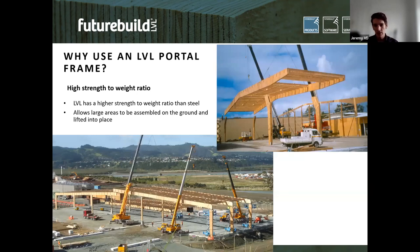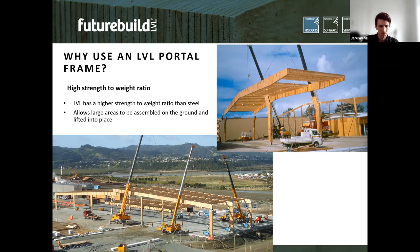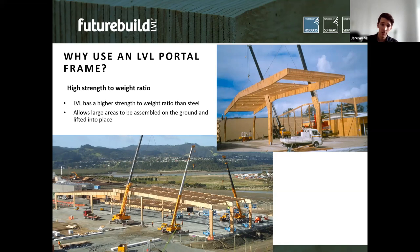LVL has a higher strength-to-weight ratio than hot-rolled steel. This enables large areas of roof framing to be assembled at ground level — secondary framing, bracing, wire netting or mesh can all be done at ground level where it's safe and comparatively quick. You then pick up the assembled bay and lift it onto the columns. This bay-lift technique is a significant practical advantage.